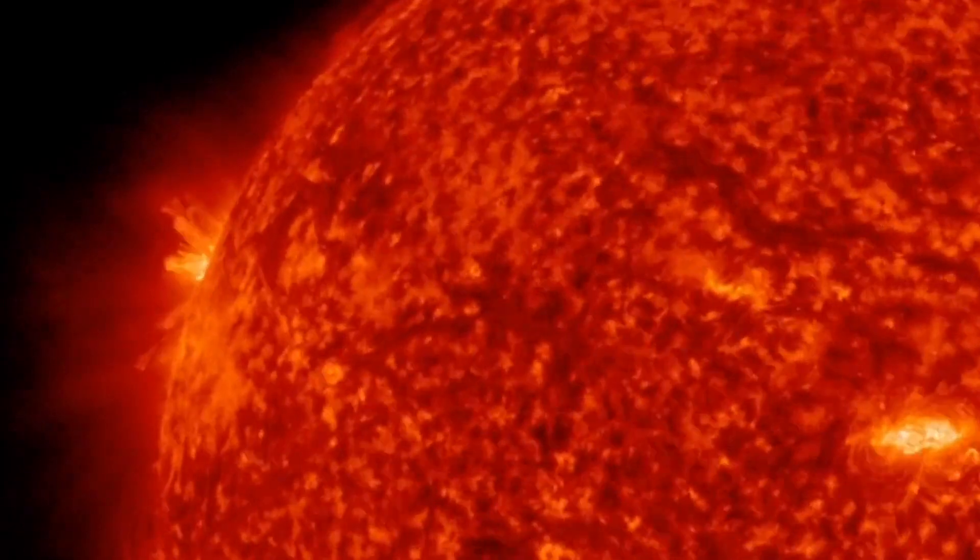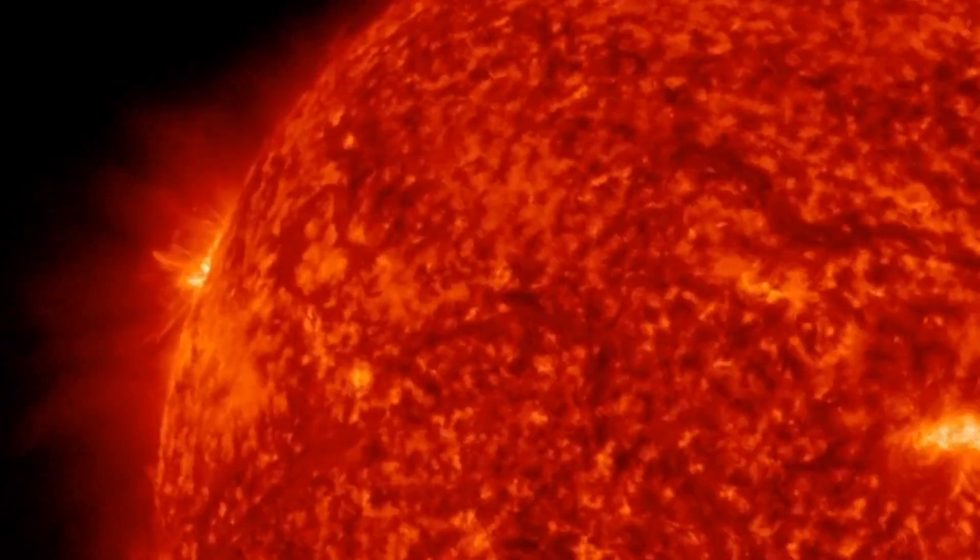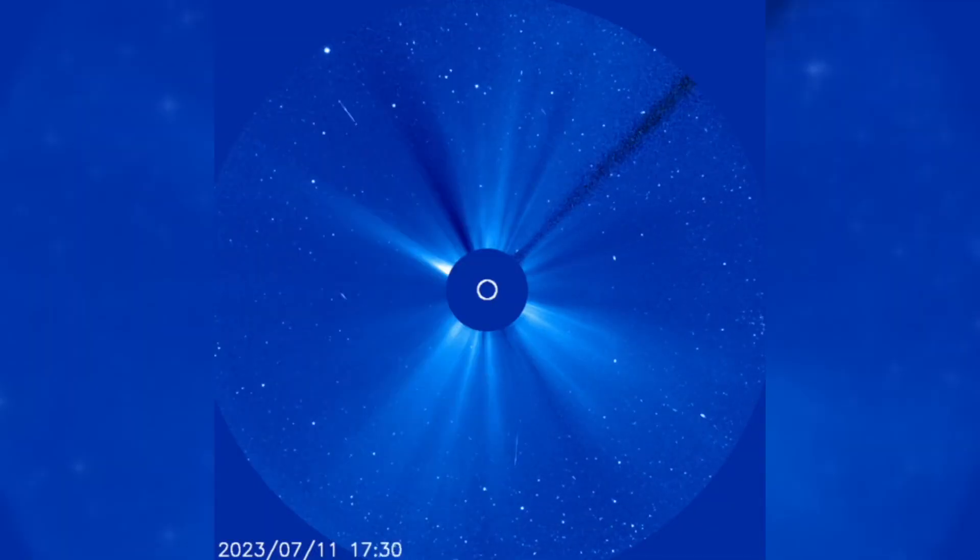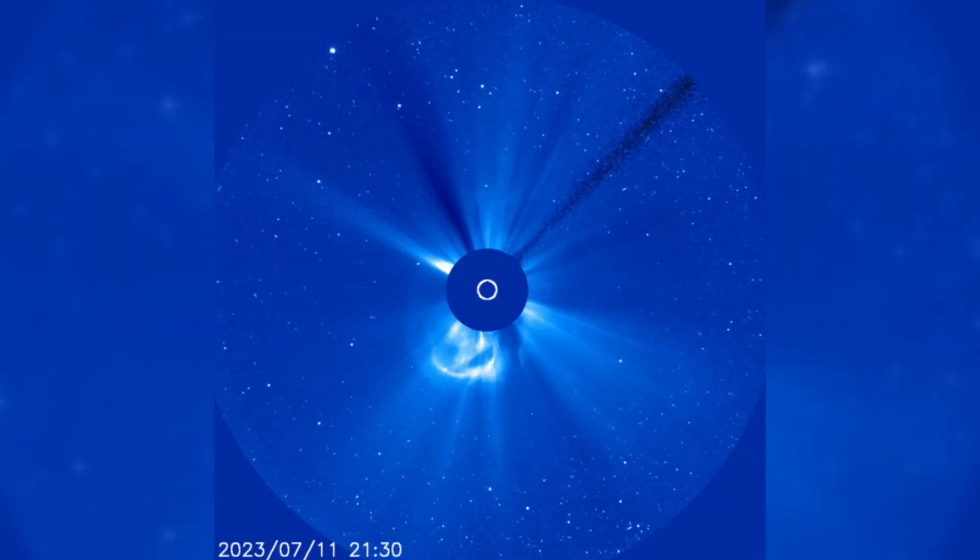A big new sunspot is emerging over the sun's northeastern limb, crackling with solar flares. These powerful bursts of energy are creating quite a stir in the solar system.